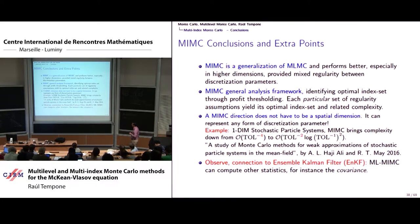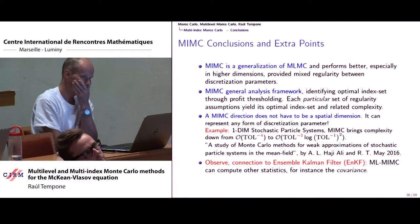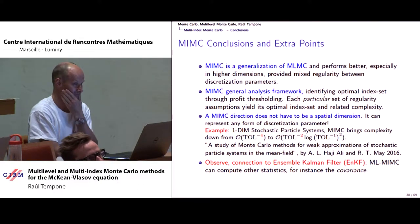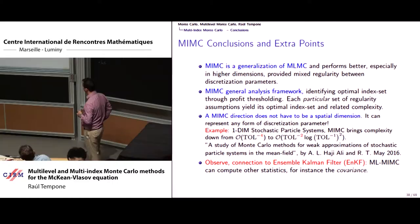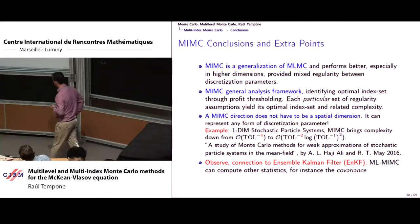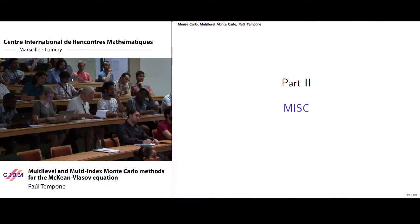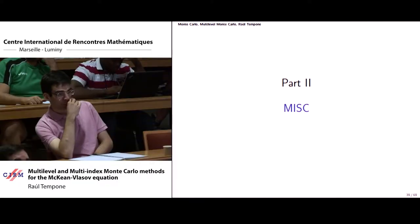Wrapping up: multi-index Monte Carlo is a generalization of multi-level that performs better when you satisfy the mixed regularity properties. You should use it if you have that regularity available. It was presented as a general framework — the way to think about it is through the profits — and multi-index Monte Carlo does not need a special dimension.